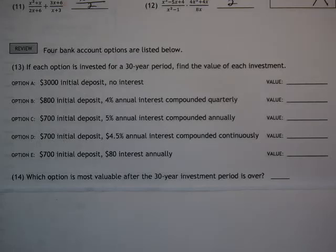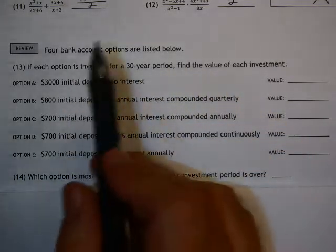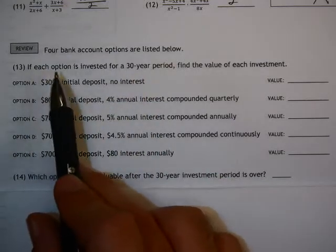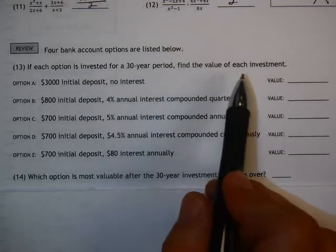This Algebra 2 video is on Concept 22, and I'm going to look at number 13, all these options. It says four bank account options are listed below. Number 13, if each option is invested for a 30-year period, find the value of each investment.